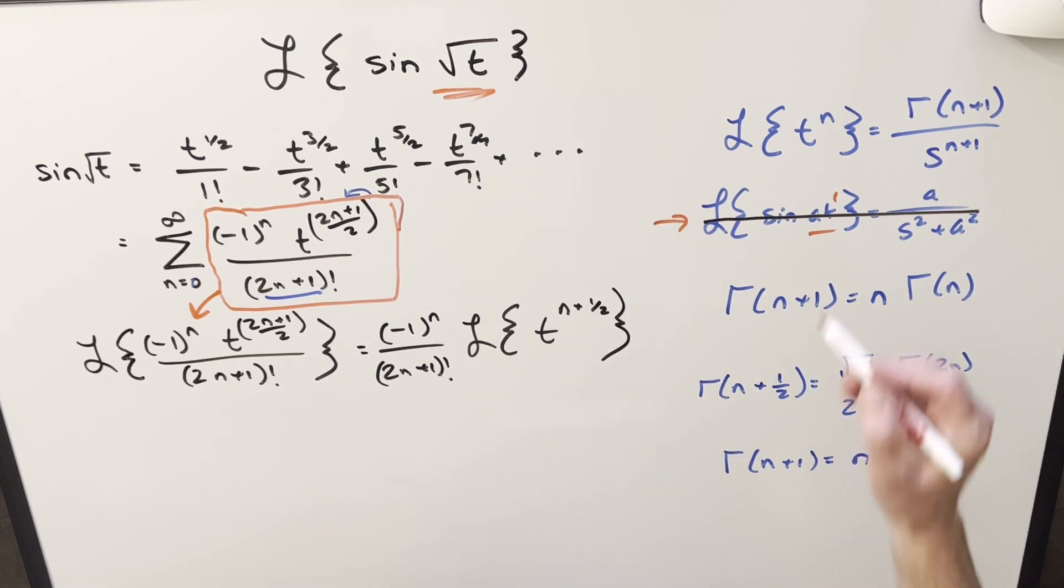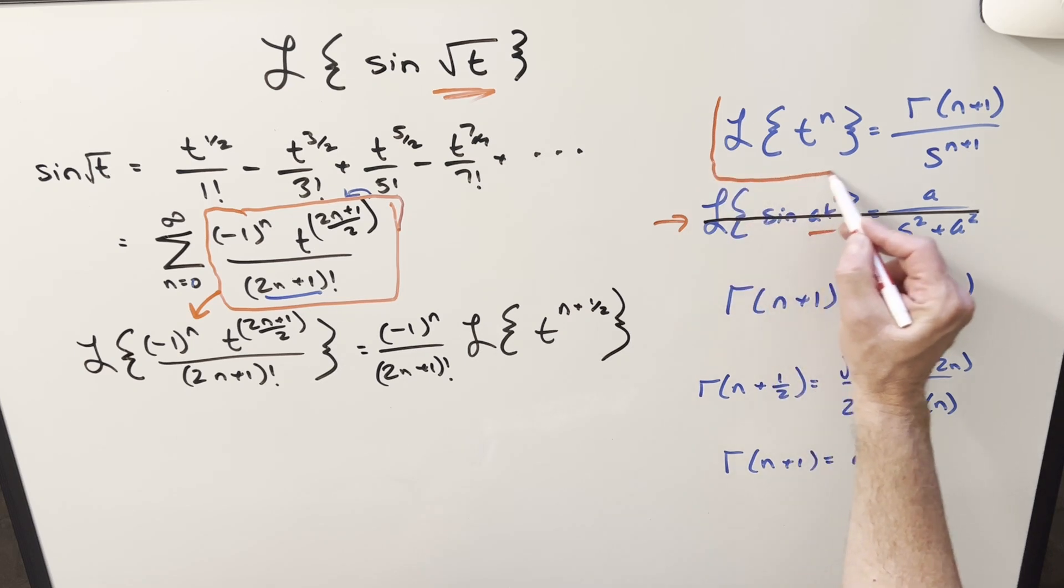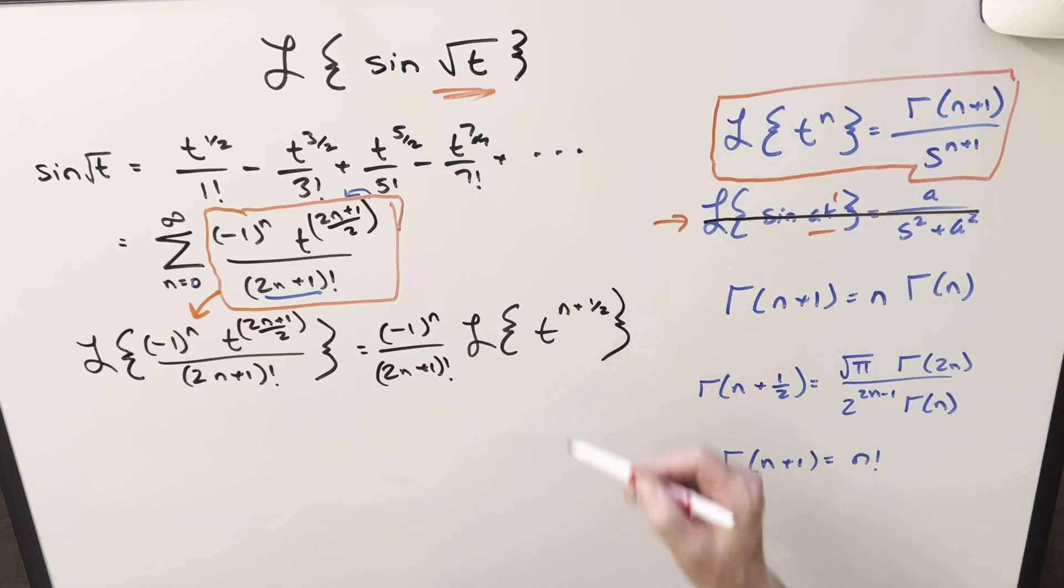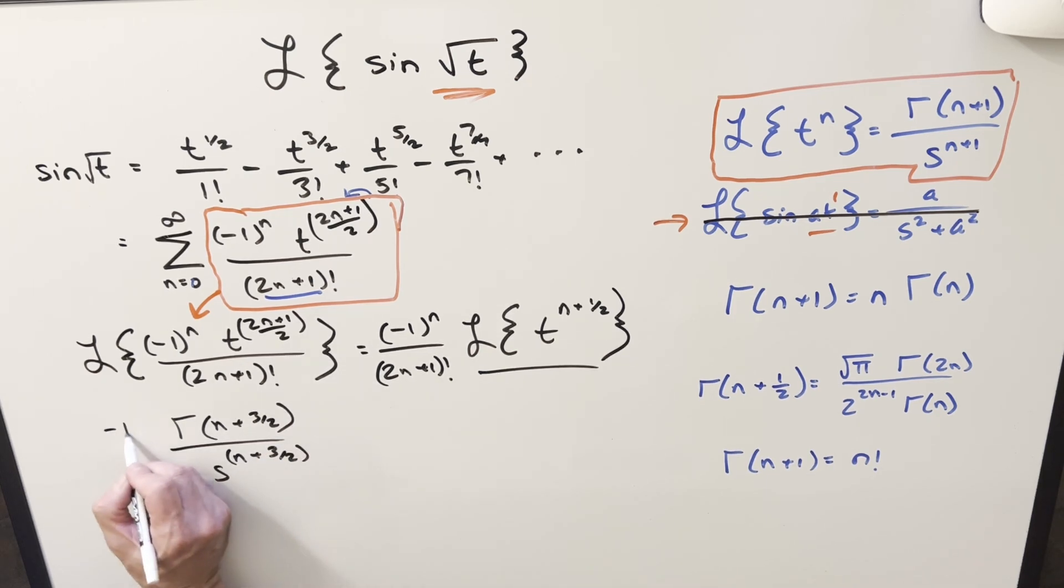And then here, all we're going to do is use this formula up top here to put this in terms using the gamma function on this. We just need to add a 1 onto this right here. So using the formula on this, what's going to happen is this is going to become gamma of n plus 3 halves now. And then in the denominator, we're going to have the same value in the exponent s to the n plus 3 halves. And we still have all this constant stuff up front.